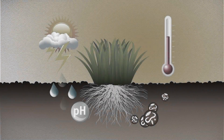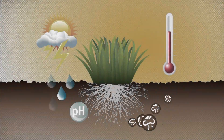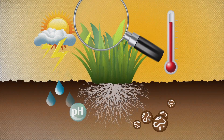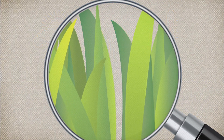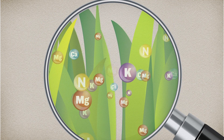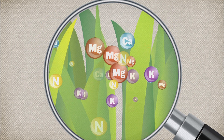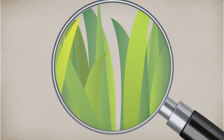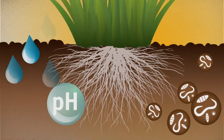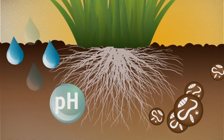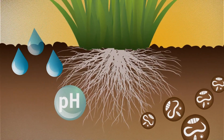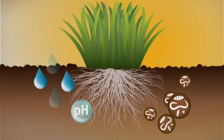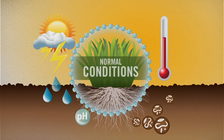In times of extreme stress, when turf absolutely needs nutrients to survive, foliar products provide the ability to get vital nutrients into the plant directly through the plant's leaves, giving you the ability to bypass the root system and any potential factors beneath the soil, allowing the turf to utilize the nutrients more quickly and efficiently.